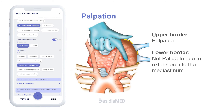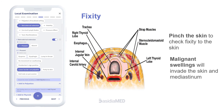During palpation, the upper border of the thyroid will be easily palpable, while the lower border will not. Fixity to the skin is checked by gently pinching the skin; malignant swellings are more commonly fixed to the surrounding structures.